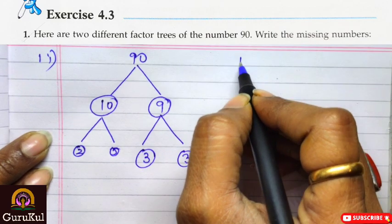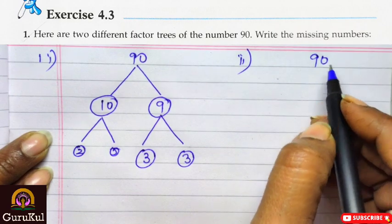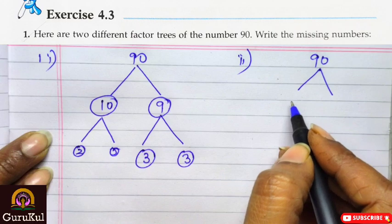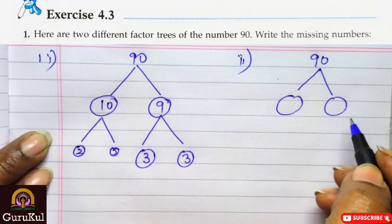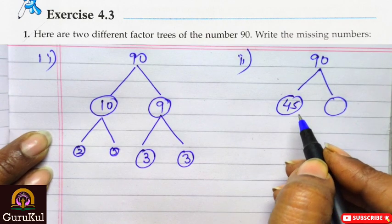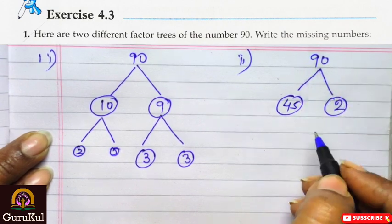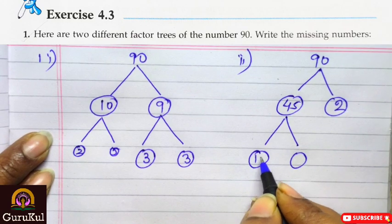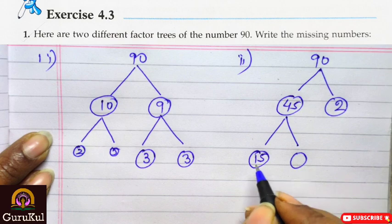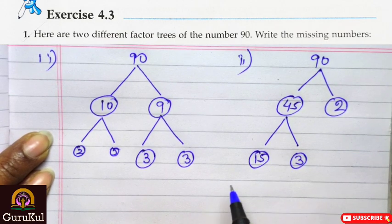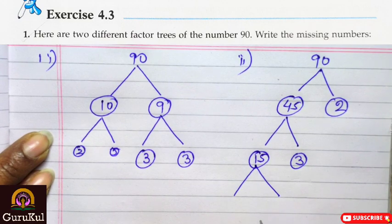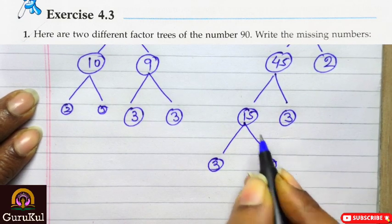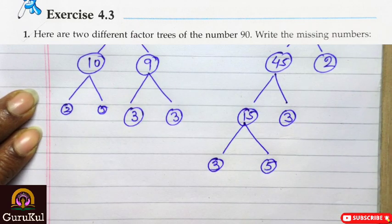2nd part: 90 which has been divided into 2 parts. 2 and 45 — 2 forty-fives are 90. 45 is further divided into 2 groups. One of them is 15. 15 threes are 45. Now 15 is further divided into 2 groups: 3 and 5 — 3 fives are 15. So this is factor tree 2. Based on this, the entire exercise is to be solved.